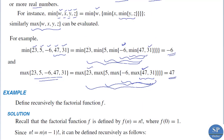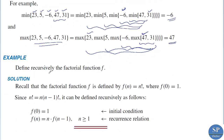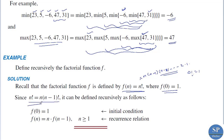Now, define recursively the factorial function f. We know f(n) = n!, where f(0) = 1. That is, n! = n × (n-1) × (n-2) × ... × 2 × 1. We can write n! = n × (n-1)!, so it can be defined recursively as: f(0) = 1 (initial condition), and f(n) = n × f(n-1) for n ≥ 1 (recursive relation).